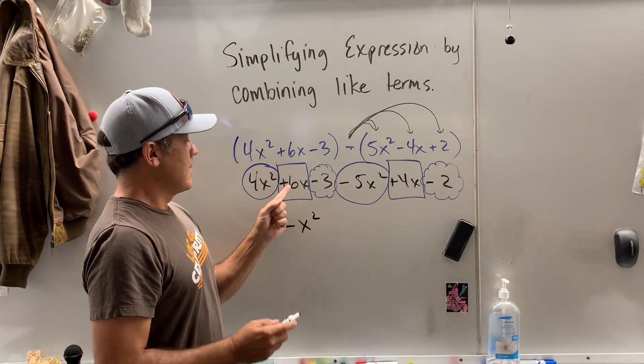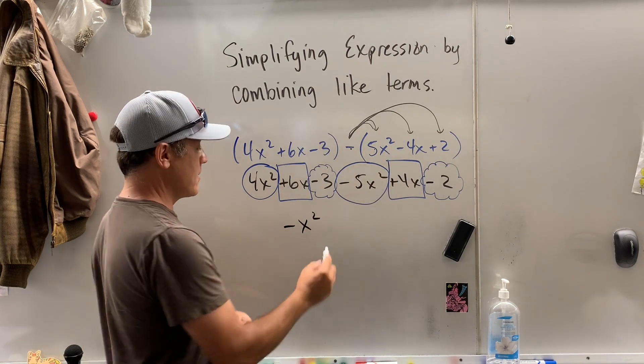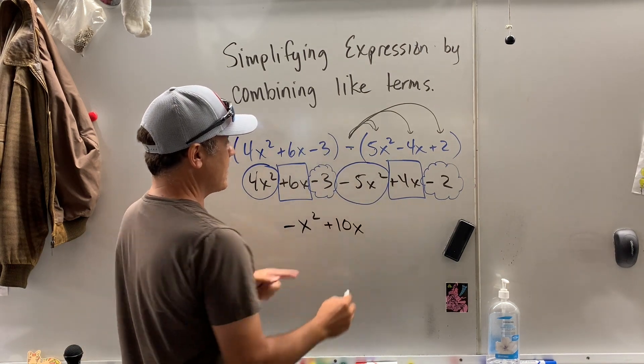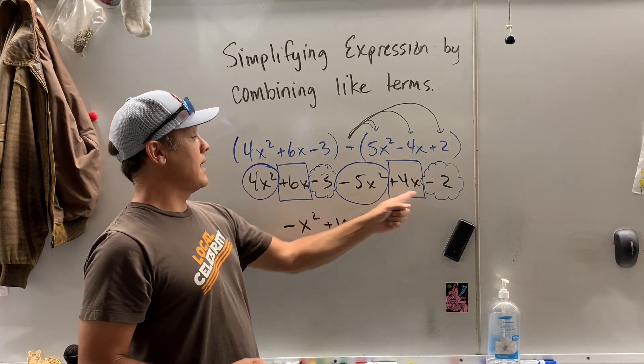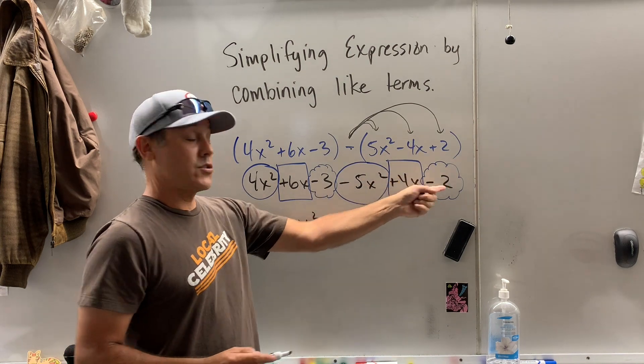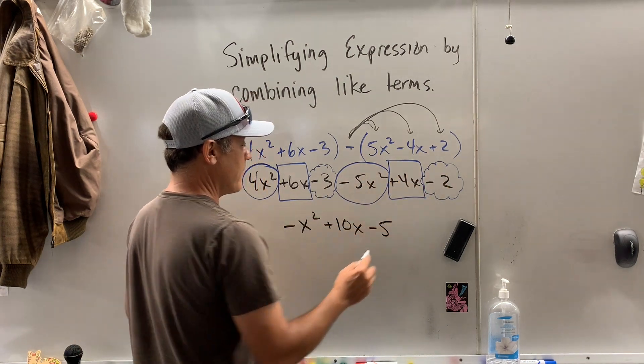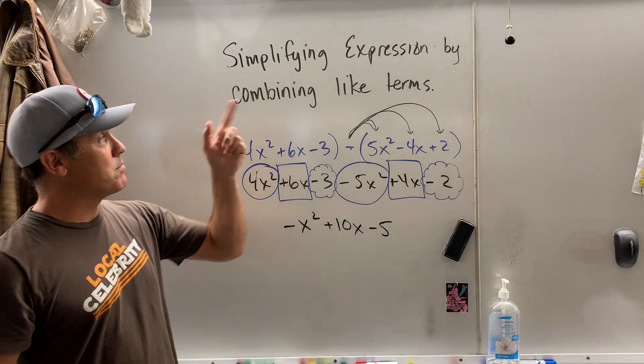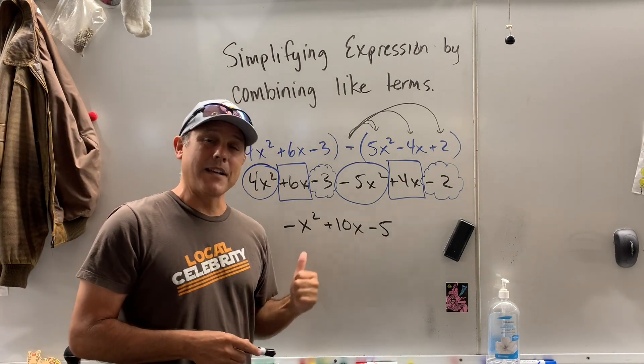And now the boxes. I got six x's plus four more x's is ten x's. And then the little cloud, negative three. I lost two more. I lost five. And that, my friends, is how you simplify expressions by combining like terms.